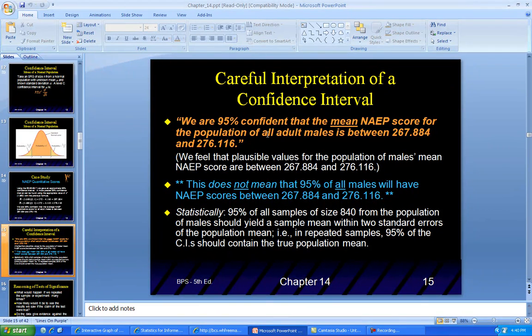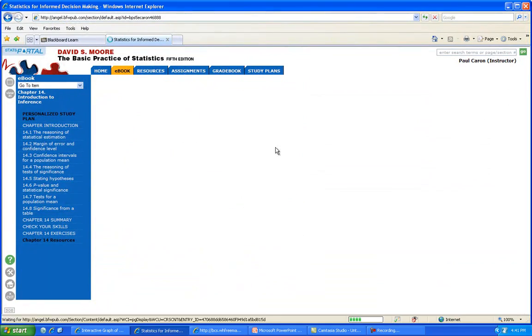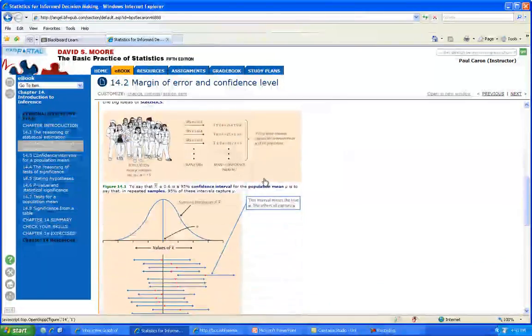Statistically, 95% of all samples of size 840 from the population of males should yield a sample mean within two standard errors of the population mean. In other words, in repeated samples—I keep doing 840 different people several times—95% of the confidence intervals should contain the true population mean.